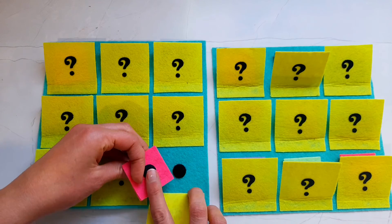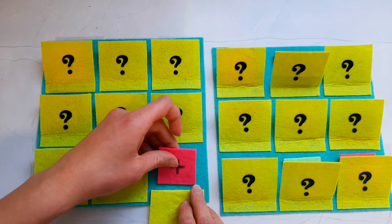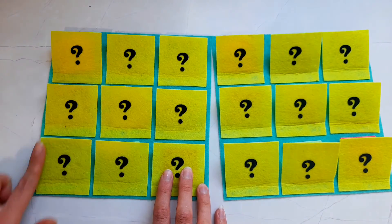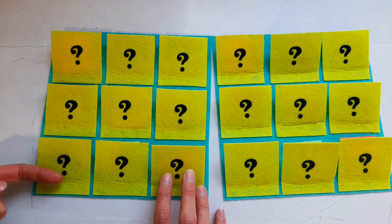Also I took velcro dots and glued them on the backs of each piece and under each flap so that all of the pieces can be rearranged after each round. And as always, I'm using felt sheets that are 20cm by 20cm in length.